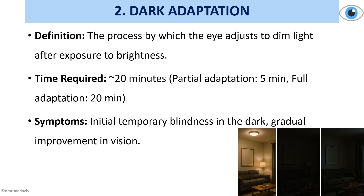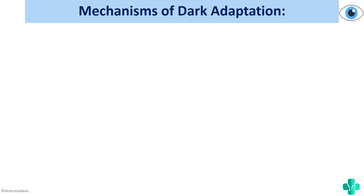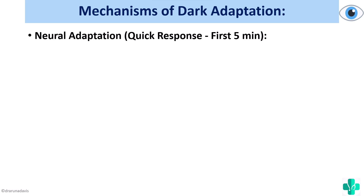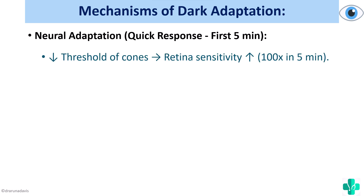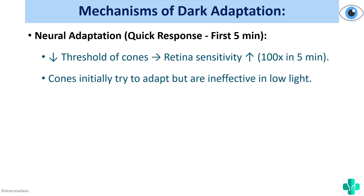For dark adaptation, there is neural adaptation as well as chemical adaptation, but chemical adaptation is more prominent. In neural adaptation, the threshold of the cones is decreased and retinal sensitivity is increased, so that any photon reaching the eye can produce an impulse. The cones initially try to adapt but are ineffective in low light. Pupillary dilation also occurs to increase the amount of light entering the eye. There is increased retinal sensitivity during the first five minutes due to neural adaptation.